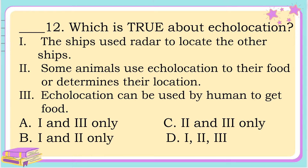Number 12. Which is true about echolocation? A. Ships use radar to locate other ships, and echolocation can be used by humans to get food only. B. Ships use radar to locate other ships, and some animals use echolocation to find their food or determine their location only. C. Some animals use echolocation to find food and determine their location, and echolocation can be used by humans to get food. Or D. Ships use radar to locate other ships; some animals use echolocation to find food or determine their location; and echolocation can be used by humans to get food. The correct answer is letter B.